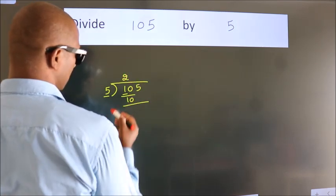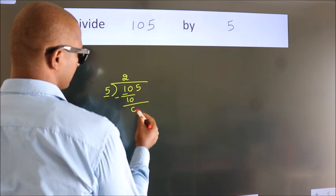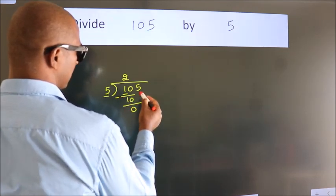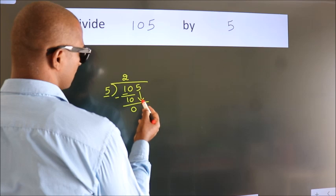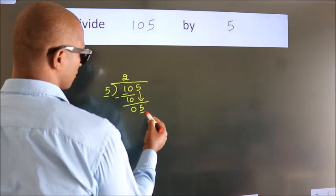Now we should subtract. We get 0. After this, bring down the beside number. So 5 down. So 5.